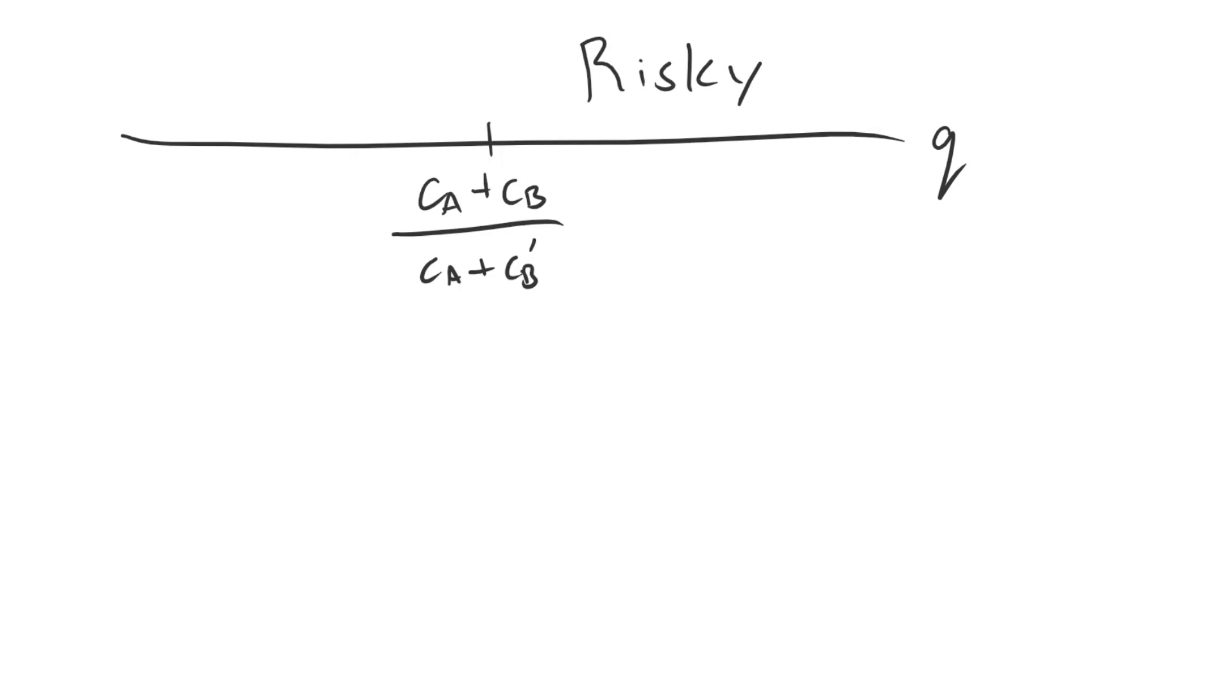In contrast, if Q is below that quantity, that's the same thing as saying that A thinks B is sufficiently likely to be the low cost type, and so it's better to make a safe demand that both the high and the low cost type will accept.